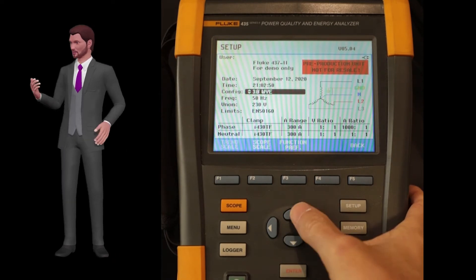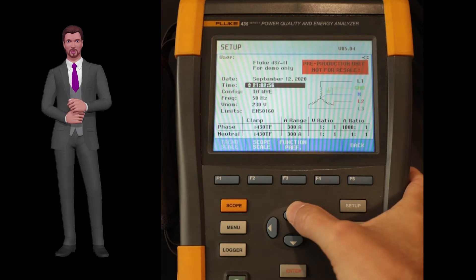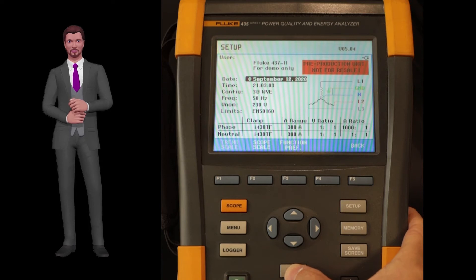But before changing it, I suggest that with the up arrow key you go up two positions, to set the date correctly. Once you are on the date indication, press the enter key located at the bottom of the instrument.